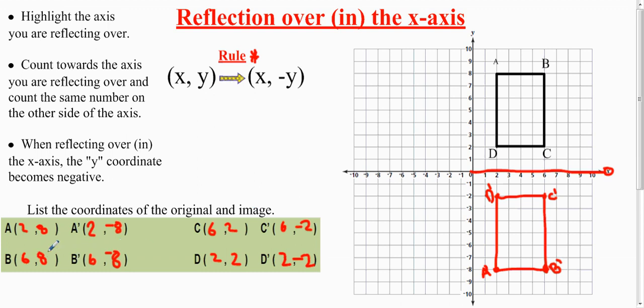And B, the same thing happens. And D, the same thing happens. So reflection over the x, the y becomes negative. Reflection over the x, the y becomes negative.